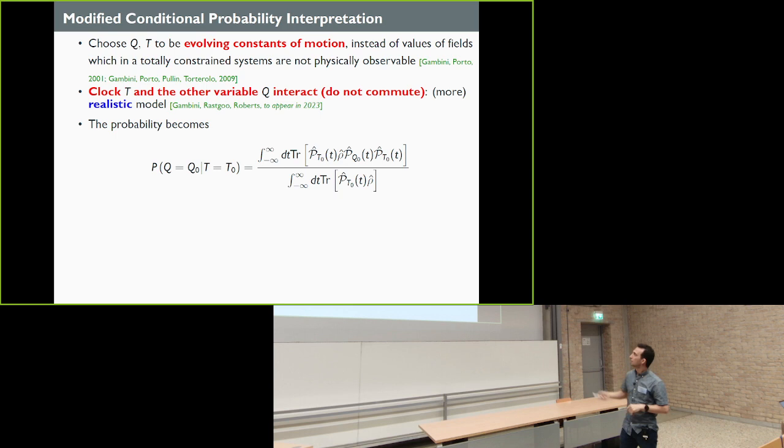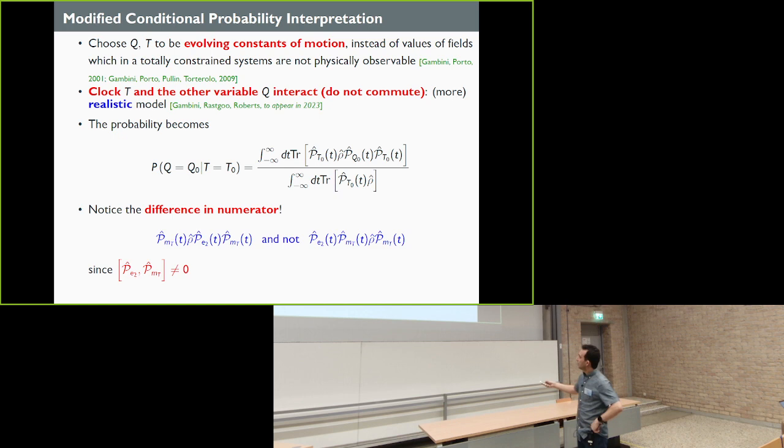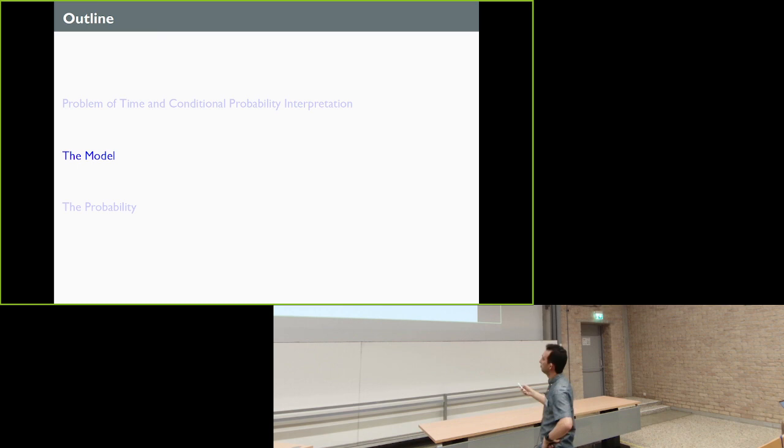This is what we have actually in our new work. We now consider interacting clock and system, and that means that they don't commute. So because I have five minutes, I have to go faster. So it means that now our probability, first of all, it has an integral over dt because these are now evolving constants of motion. This projector corresponds to evolving constant. They have t in them, but we don't know where does that capital T become equal to capital T naught. So we have to integrate over the whole range of this experiment. And the numerator is now different from all previous works because these don't commute. These two new things remedy the problems of the Page-Wooters system.